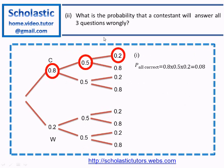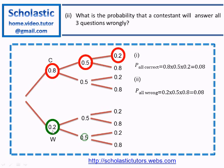Secondly, what is the probability that a contestant will answer all three questions wrongly? That is P(all wrong). We look at the tree diagram: first question wrong, second question wrong, third question also wrong — that is W, W, W. So P(all wrong) is 0.2 times 0.5 times 0.8, which equals 0.08.